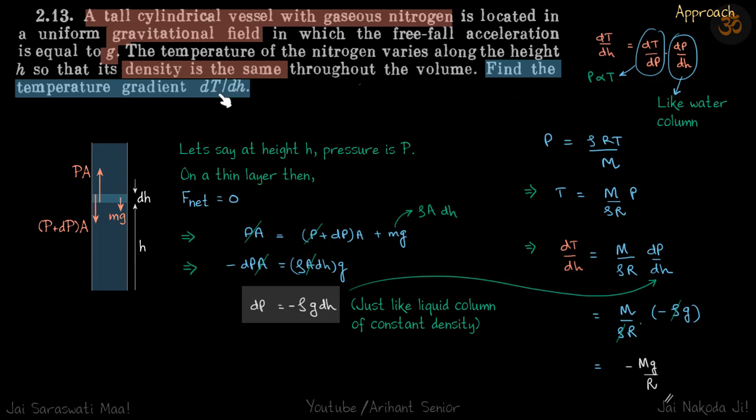So directly we cannot seem to think of any relation between temperature and height, correct? But we can imagine how pressure will vary with height if we have some density material inside, and we know how we can relate temperature and pressure. So our approach here is dT by dH by chain rule we can write as dT by dP into dP by dH.